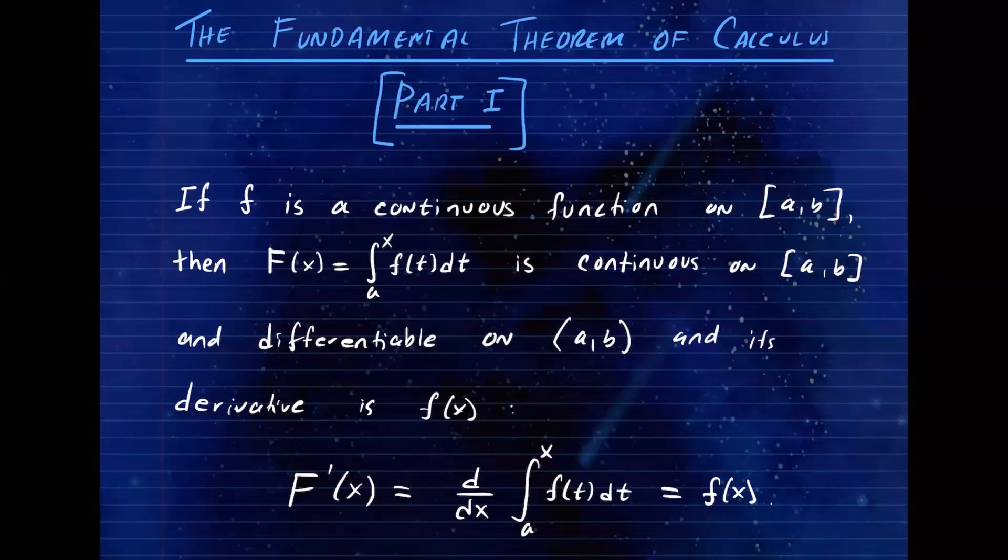Suppose that little f is a continuous function on the closed interval [a,b], then the big F(x), which is the antiderivative of little f, we're defining that as the net area under this curve from a to some x. And we're assuming that this function is also continuous on the closed interval [a,b] and differentiable on the open interval (a,b), then its derivative is little f(x).